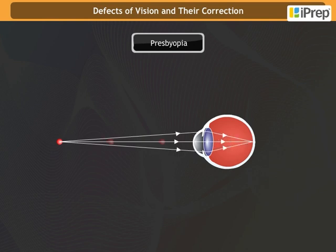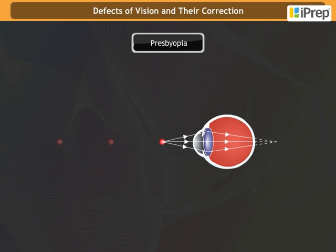Presbyopia: the power of accommodation of the eye usually decreases with aging. For most people, the near point gradually recedes away and they find it difficult to see nearby objects comfortably and distinctly without corrective eyeglasses. This defect is called presbyopia. It arises due to the gradual weakening of the ciliary muscles and diminishing flexibility of the lens.